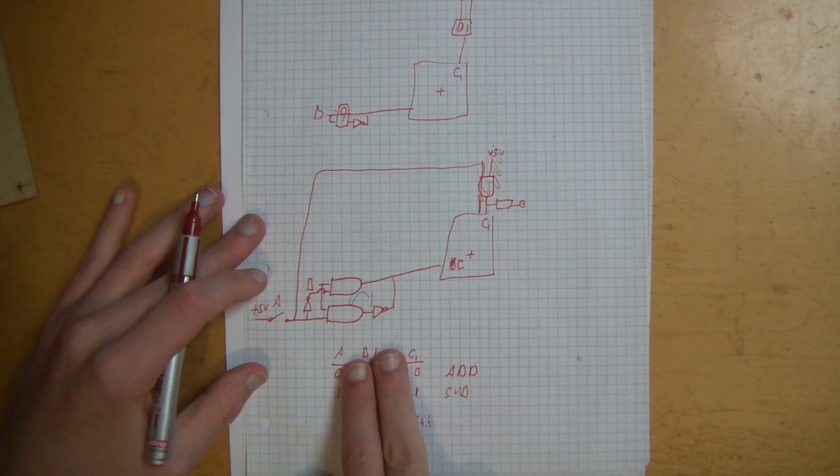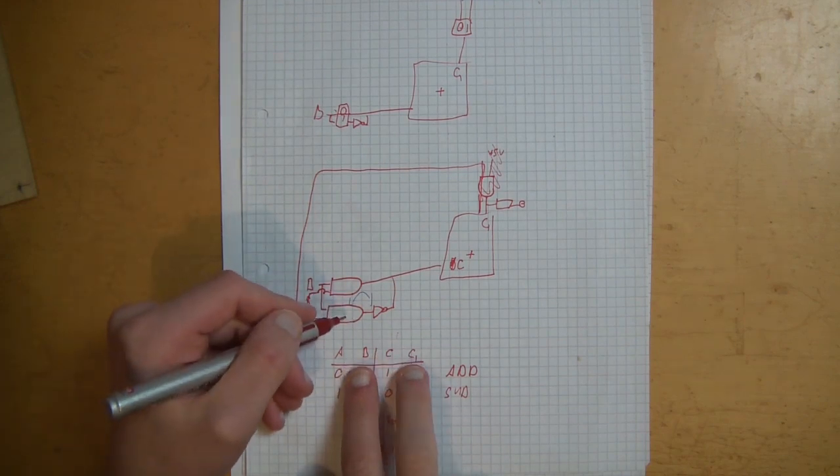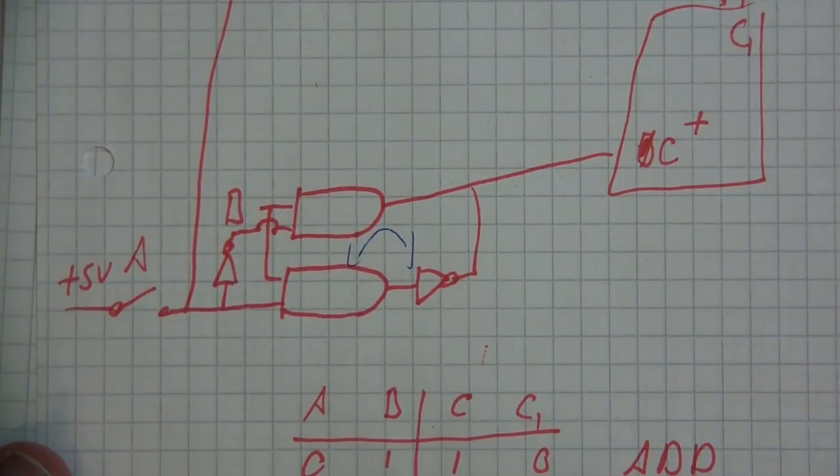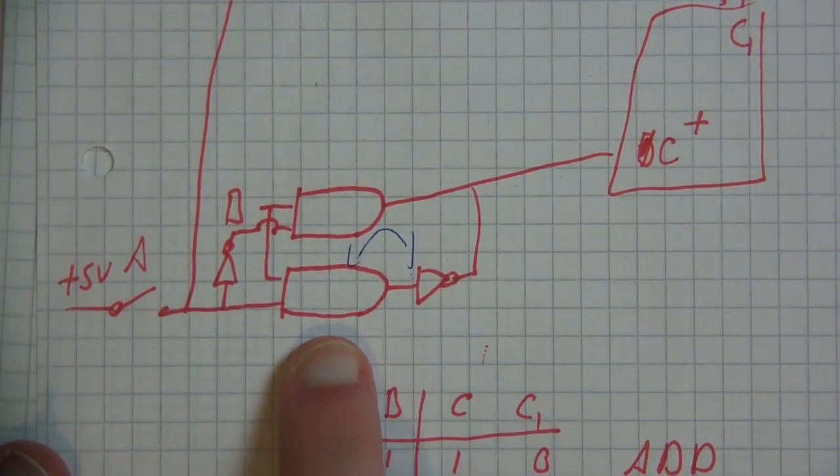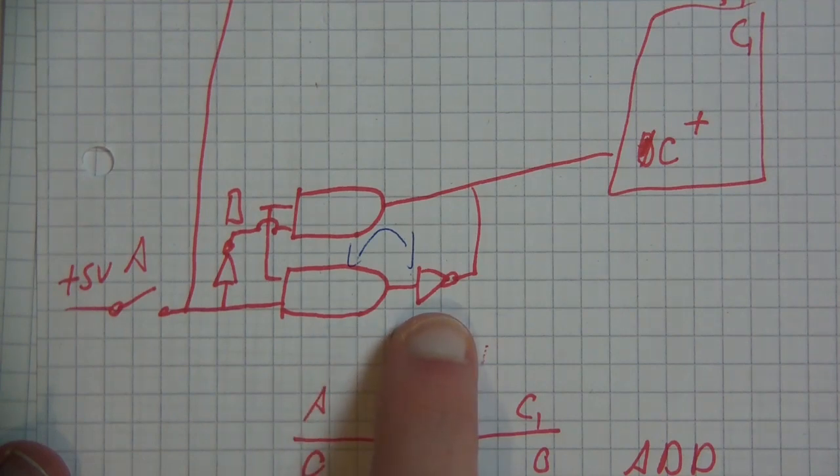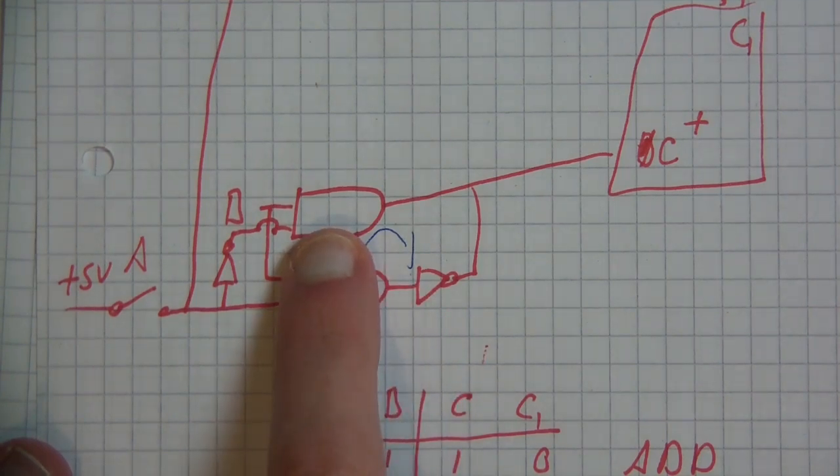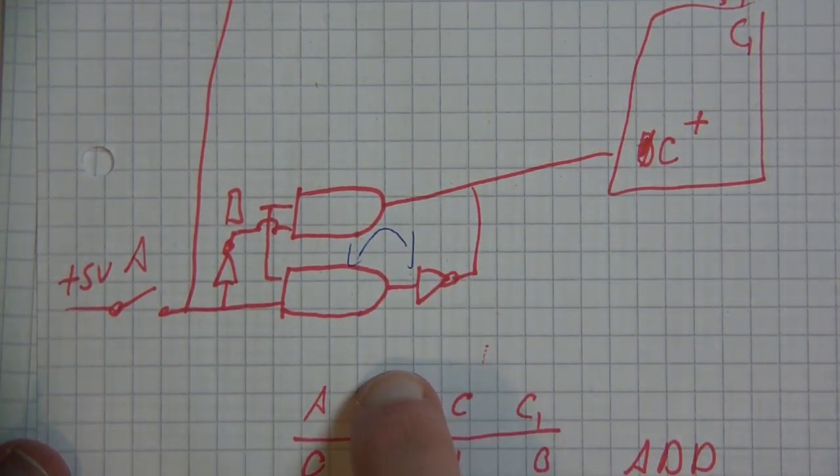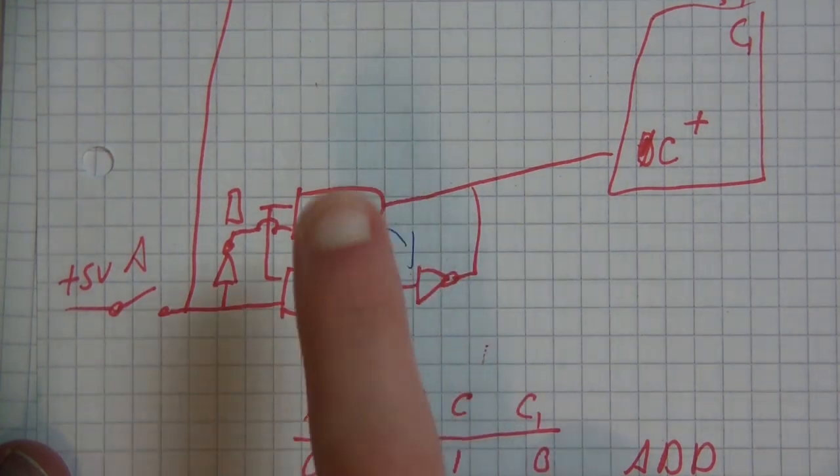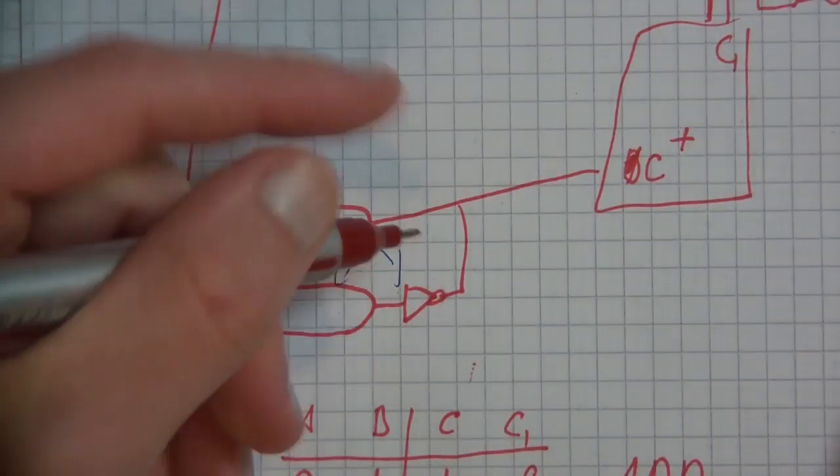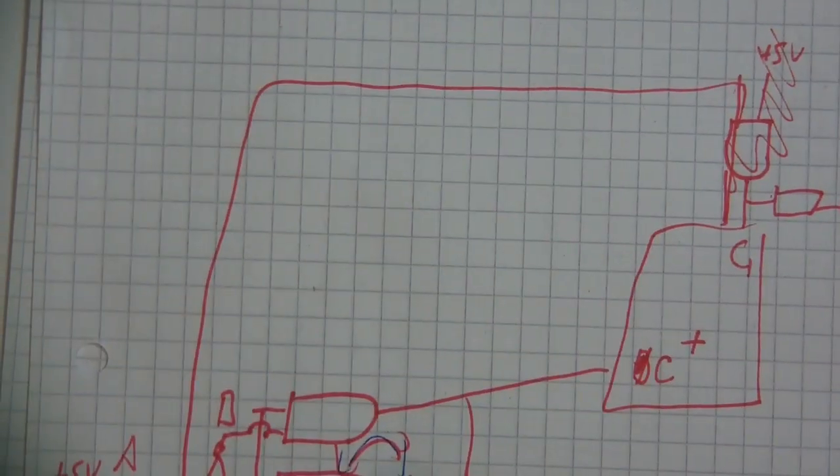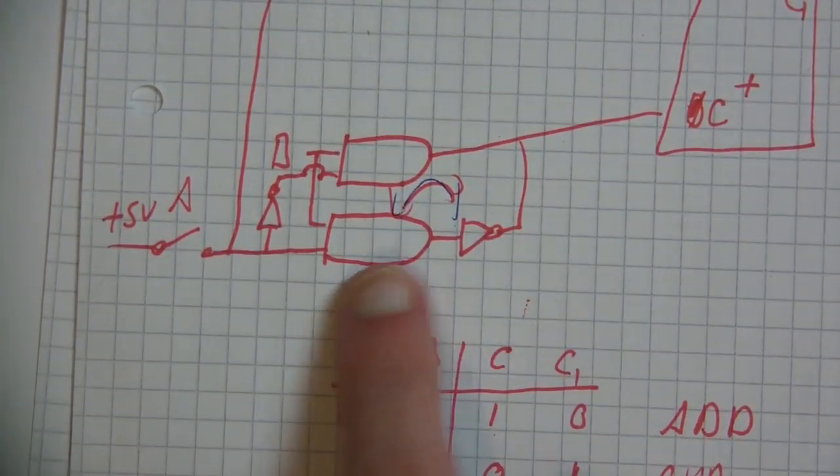The more problematic part though is this right here. I have this AND gate and I have this inverter. The problem is that if this AND gate is zero, the inverter will always be one, even if this is zero. But they both feed into the same line. So you would have a one here and a zero here, and then it wouldn't work. What you have to do is swap those two around for it to actually work.